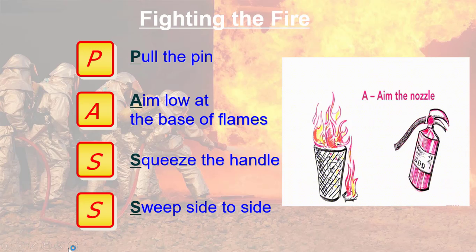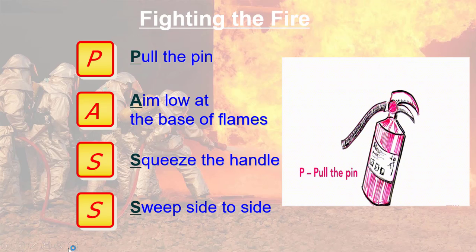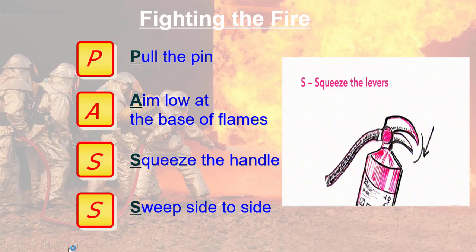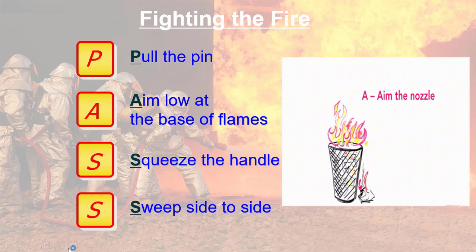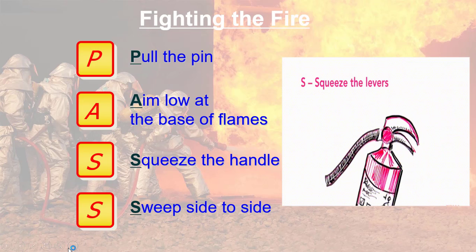Fighting the fire — PASS. P represents Pull the pin: first, remove that safety pin. A represents Aim low at the base of the flame — don't go near the flame; maintain a minimum distance of six feet from the fire to your hand or cylinder position. S represents Squeeze the handle. The other S represents Sweep side to side — make a complete sweeping motion side to side so that the agent makes full contact. This is for liquid fire.